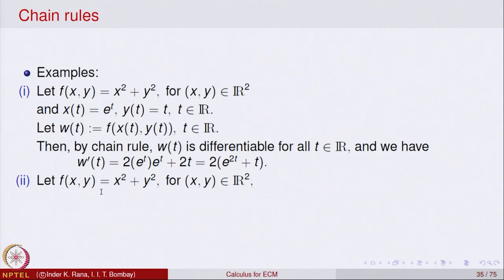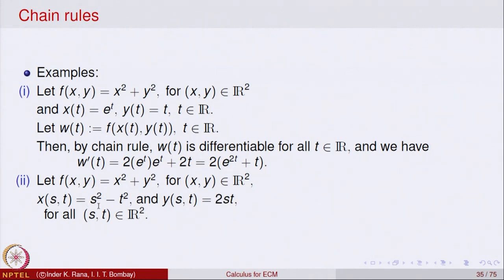Now let us look at the same function f(x,y) = x² + y², but where x is a function of two variables s and t: x(s,t) = s² − t², and y(s,t) = 2st. It is the same function of two variables, but now x and y are each functions of two variables s and t. We can substitute these values into x² + y², but the formula becomes quite complicated, so let us use chain rule to find the partial derivatives.